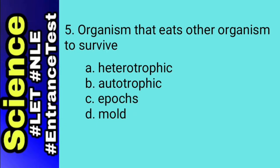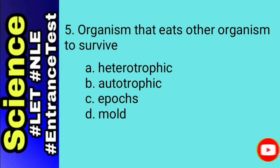Let's do elimination for this part. For letter D, although it is an organism that eats other organisms to survive, it is basically not the answer, because the question is very broad and does not pertain only to modes. We also eliminate letter C because it is not an organism but time. Primary producers are also called autotrophs. The answer for this number is heterotrophs — heterotrophs are also called consumers that rely on other organisms for energy and nutrients.